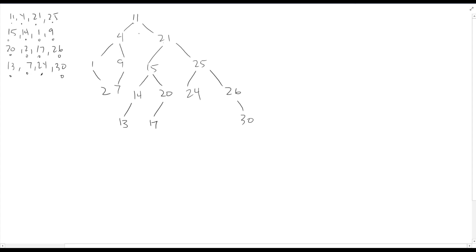Remember, minimum is found by going left all the way — that gives us this node, which is our minimum. Even though it has a right child, those are all greater, so that must be our minimum. Maximum is going right all the way, so that's our 30. And remember our in-order traversal — 1, 2, 4, 7, 9, 11, 13, 14, 15, 17, 20, 21, 24, 25, 26, 30 — gives it to us in order.